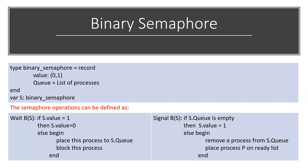The possible values for binary semaphore are 0 and 1. In a record-based structure we can have multiple values, but in binary it is either 0 or 1. Here, 1 means the critical section is unoccupied and 0 means the critical section is occupied. So initially for example we set the value variable.